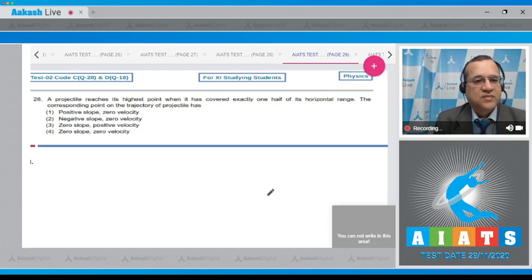Question number 28: A projectile reaches its highest point when it has covered exactly one half of its horizontal range. The corresponding point on the trajectory of the projectile has: positive slope zero velocity, negative slope zero velocity, zero slope and positive velocity, or zero slope and zero velocity. We are launching projectile from here.